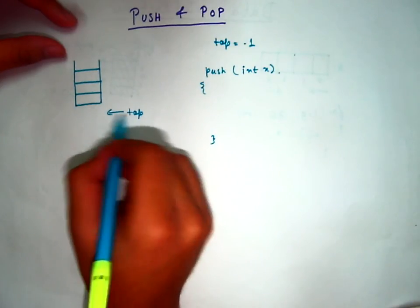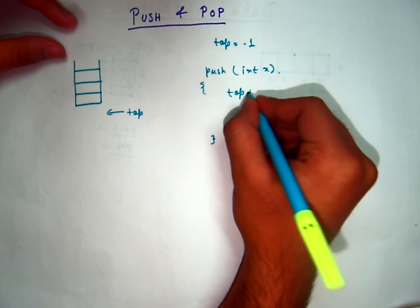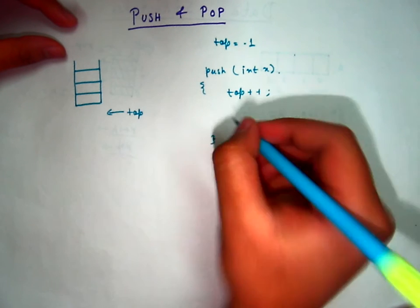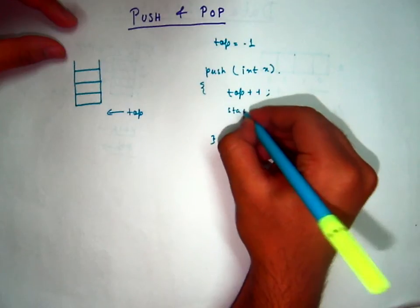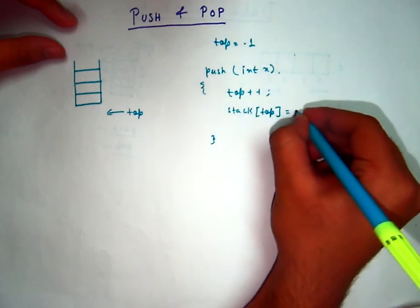Now first we have to increment the top position from here to here. First we have to increment the top position. Then we have to just enter the element at that position. So stack top equals x.